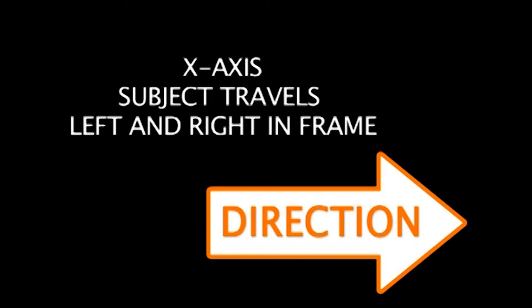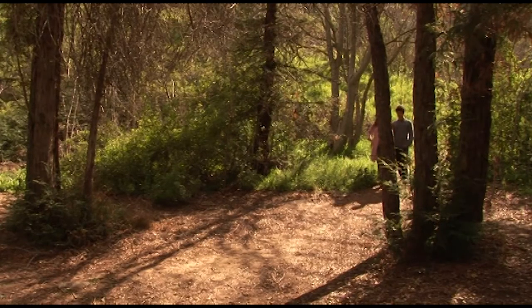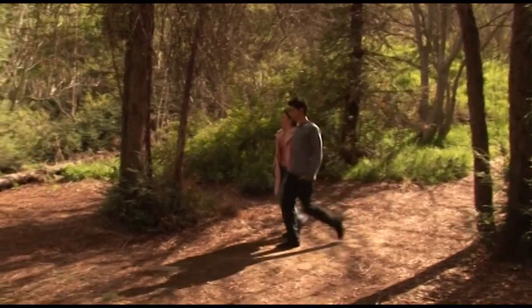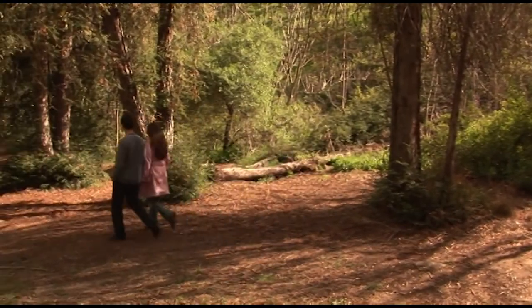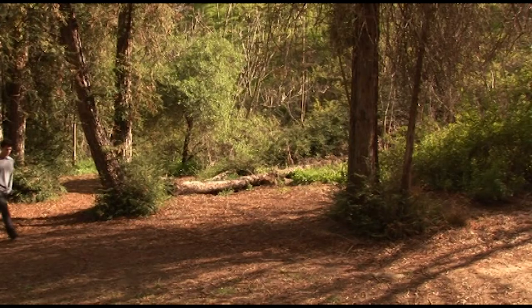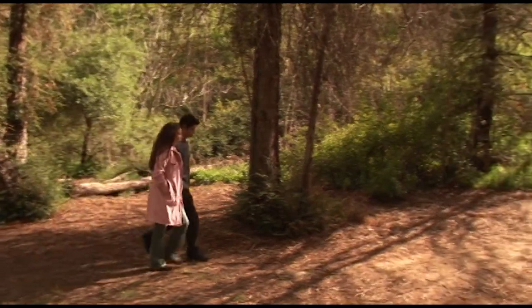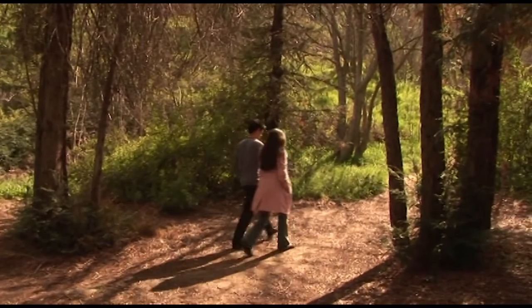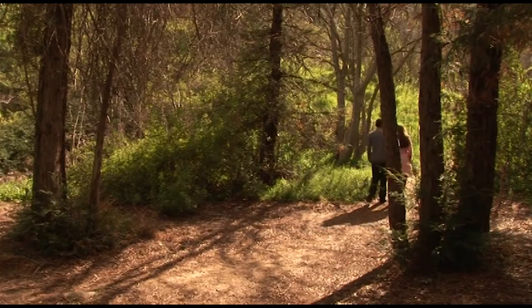On the x-axis, the subject travels left and right in the frame, and the direction of travel is extremely important. Travel towards frame right is always easier on the eye because it moves with the direction of reading text — left to right. You can use that to dramatic advantage: if someone's headed somewhere they don't want to go, make them go right to left — subliminally the audience will feel there's something uncomfortable about that motion. If it's a happy occasion or somewhere they want to be, move them from left to right, which feels like the natural progression along with the reading eye.